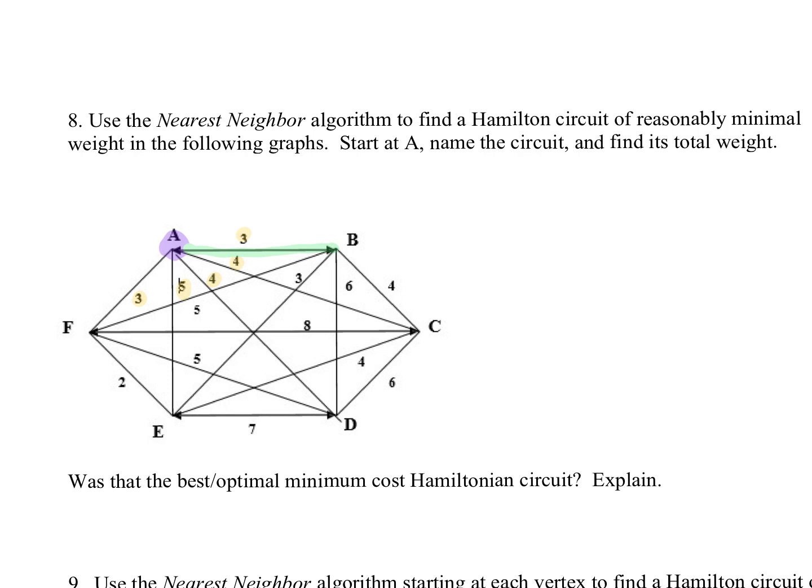That takes me to Vertex B. When I'm at Vertex B I have three, I have six, I have four, and I have this four. Sometimes these problems, it's not really clear where these number weights, which edges they belong to. I think it's four because the five has a line next to it. The rule is the closer number will go with that edge.